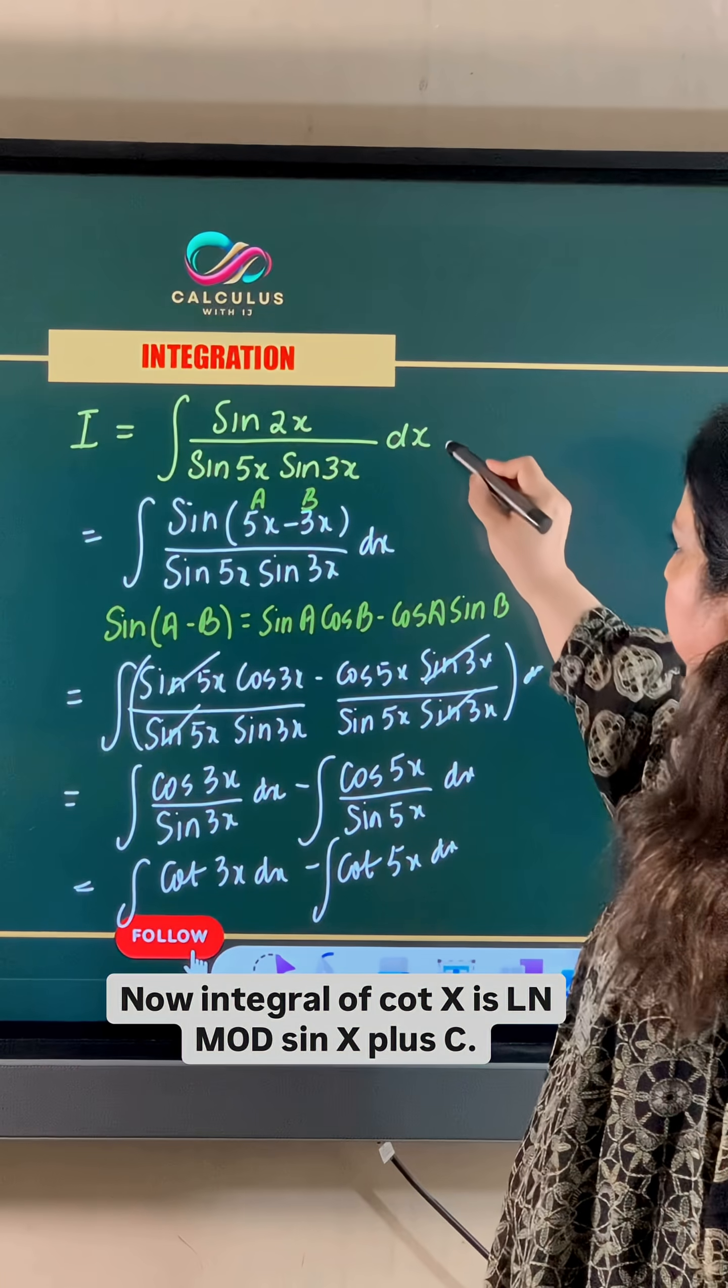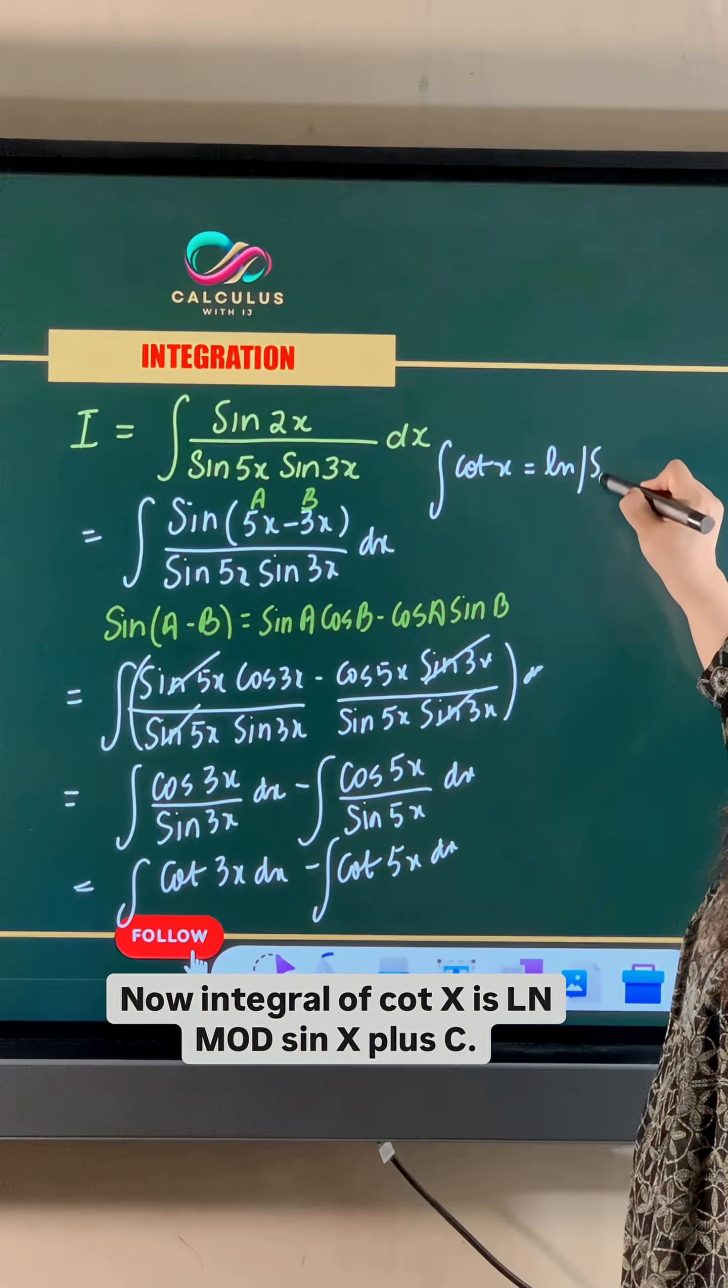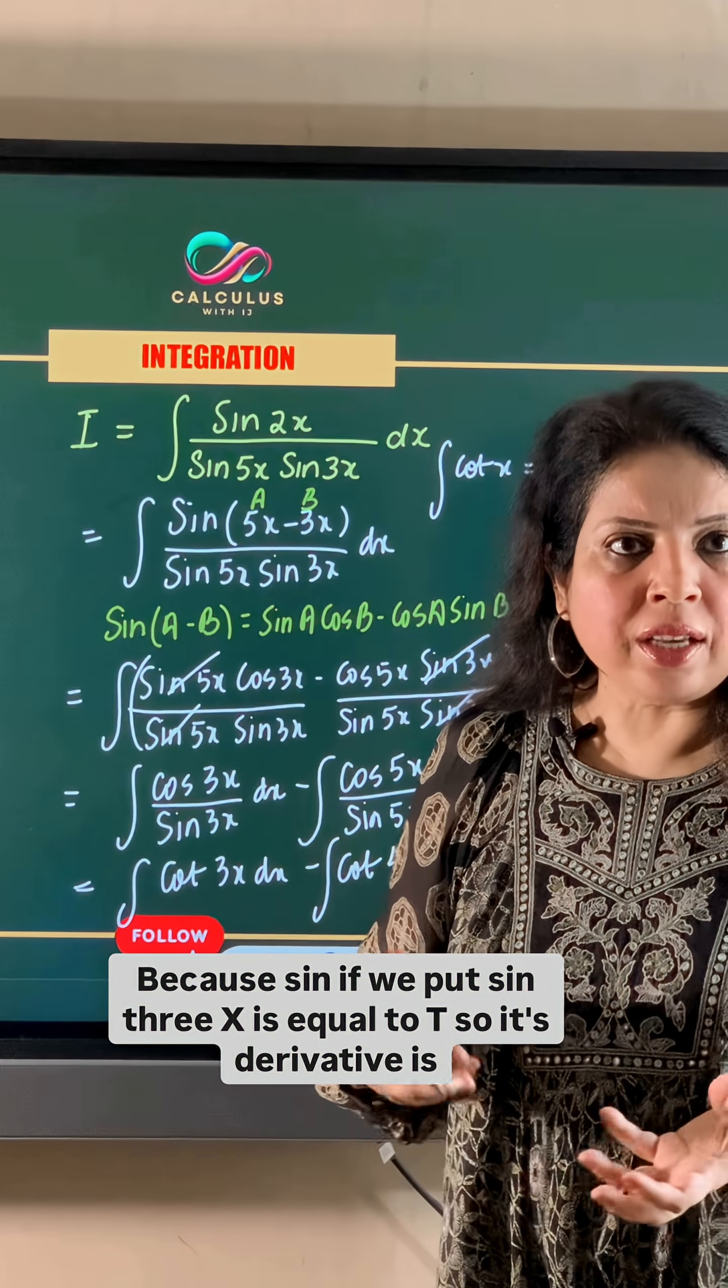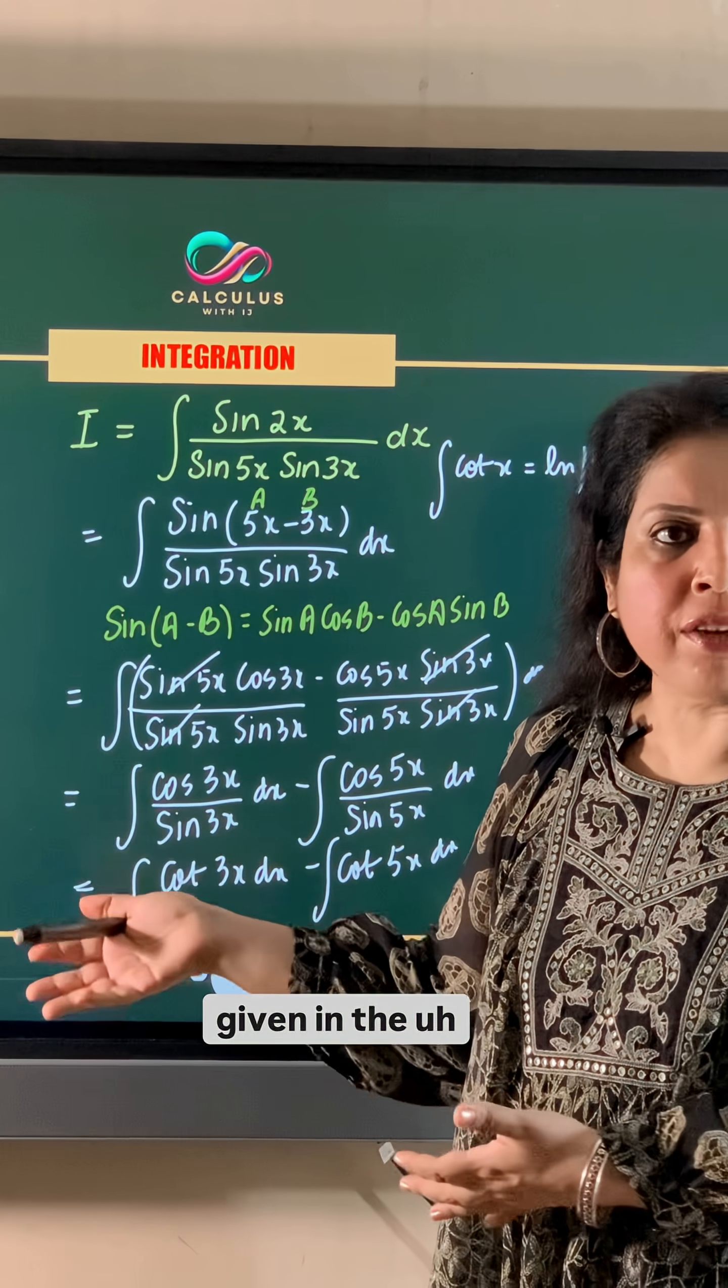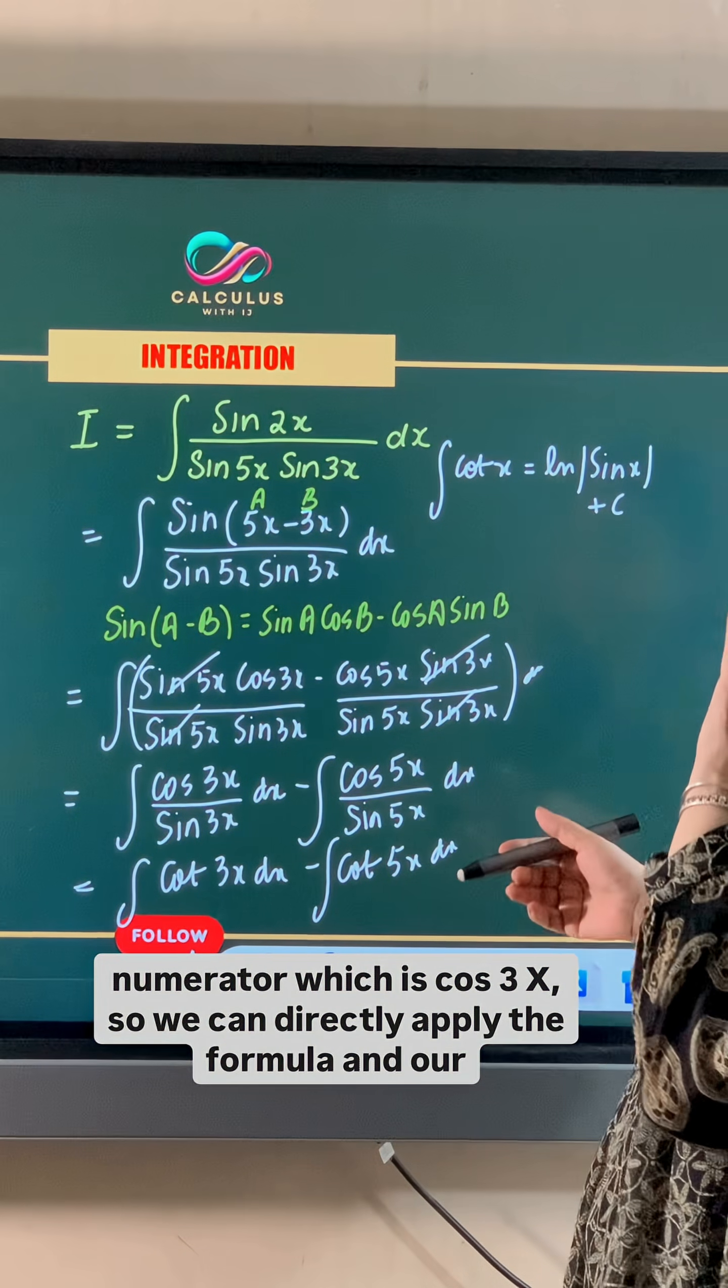Now the integral of cot x is ln modulus sin x plus C. If we put sin 3x equal to t, its derivative is given in the numerator, which is cos 3x. So we can directly apply the formula.